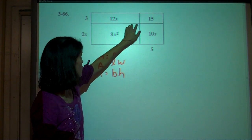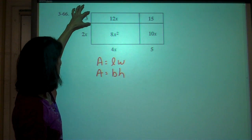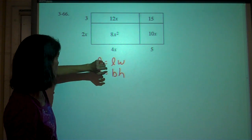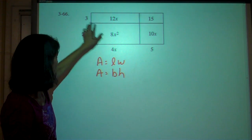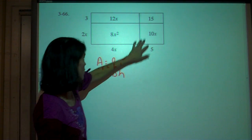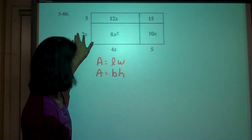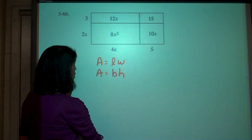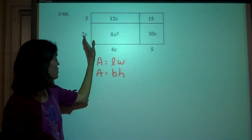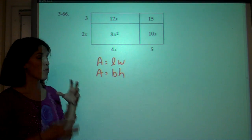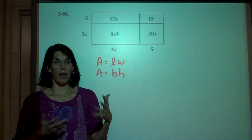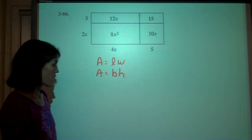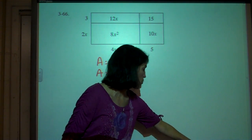The base is 4x, the height is 3, and 3 times 4x is 12x. And that's where 3 times 5 is 15, and 2x times 5 is 10x. So we're going to work on this area model and the whole idea of area of a rectangle, and we're going to use these generic rectangles to distribute.